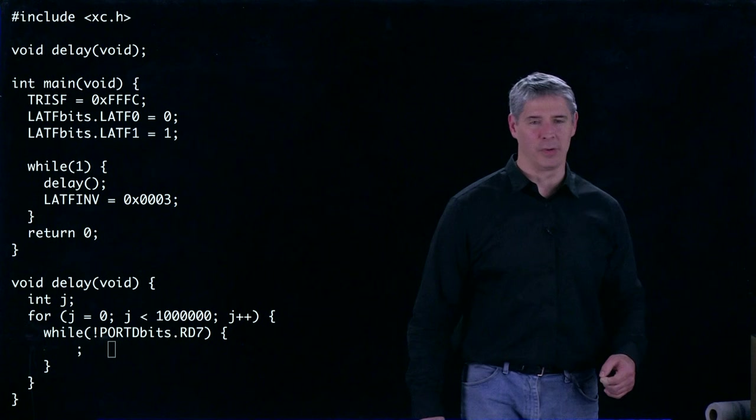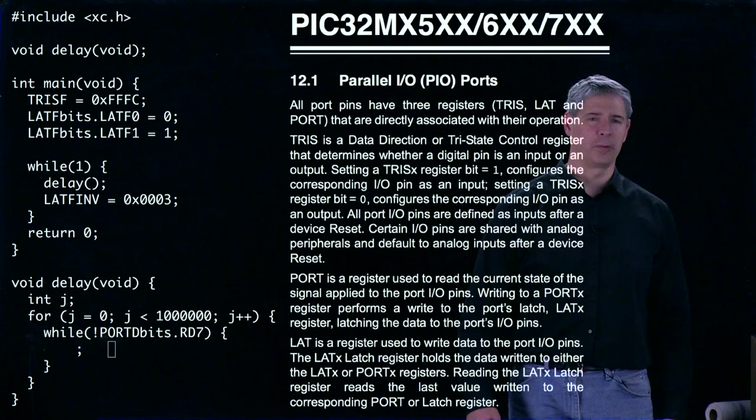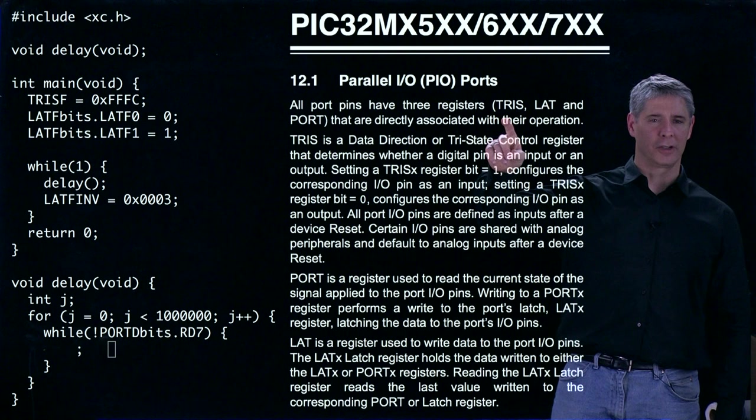So clearly these variable values must mean something important. To find out what they mean, we should consult the data sheet for the PIC32. And in particular, if we look at the digital I/O port section, we'll see the definitions of something called TRIS, LAT, and PORT.